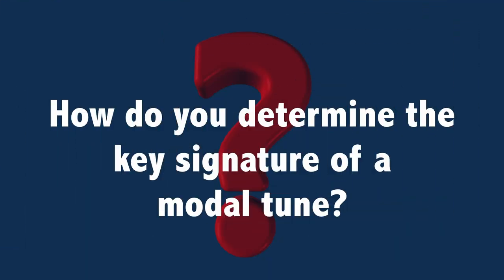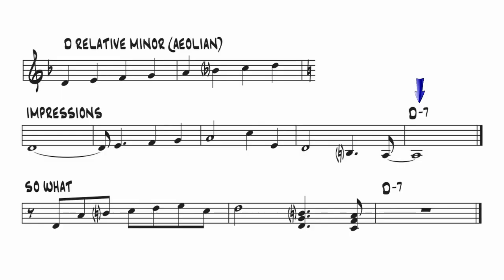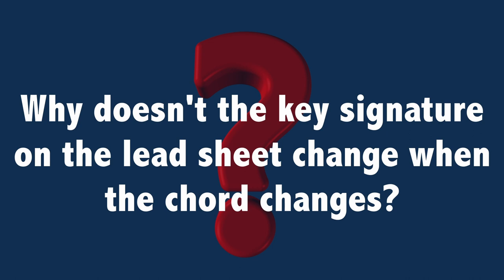How do you determine the key signature of a modal tune? In modal tunes, as with other kinds of tunes, the last chord is probably a reliable indicator of the home tonality, but perhaps less so when it comes to the key signature. The final chord for Impressions and So What is D minor. The normal key signature for D minor is one flat, since it's the relative minor of F major. But since the melodies both contain B naturals, that suggests a key signature of C. The chords in a modal tune don't typically work in sequence to define an overall key center — each chord creates a specific tonality that might be quite different in terms of key from the next chord. So in that regard, the key signature may be less relevant on a modal tune.